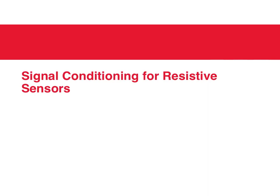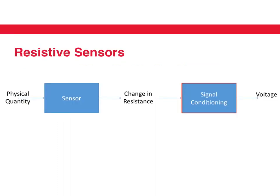In this lecture we are going to look at signal conditioning for resistive sensors. We've already looked at what a resistive sensor is — if a sensor takes a physical quantity as an input and gives an output by changing its own resistance, that's a resistive sensor. What we are looking at is what kind of signal conditioning is required so that this change in resistance can be used by an electronic circuit.